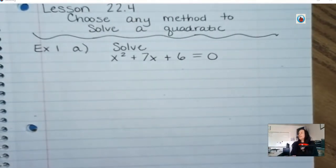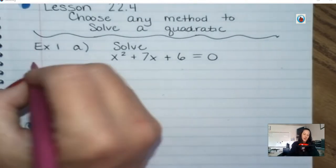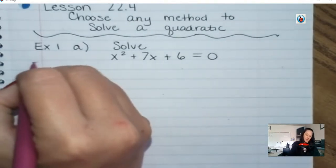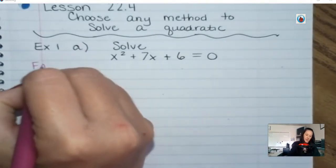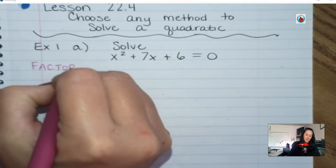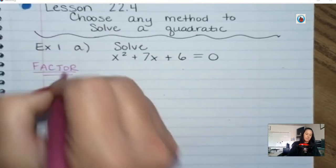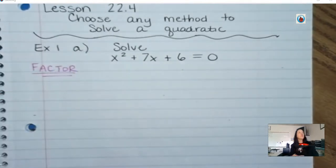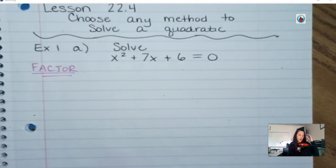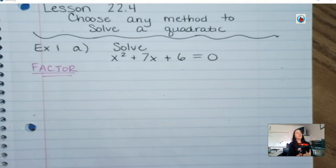Me personally, when I see this, I know that factoring is going to be the fastest thing to do here. So me personally, I would factor. We're going to practice using factoring for this one. We're also going to practice using the quadratic formula for this one, just so you can see.